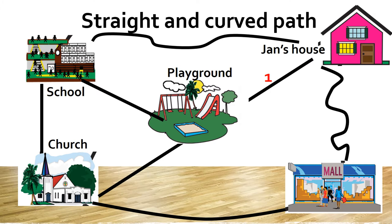How many straight and curved paths do you see on the map? Let us count the straight paths: one, two, three, four. We have four straight paths. Now let us count the curved paths: one, two, three. We have three curved paths. So, are there more straight or curved paths in this community? There are more straight paths — we have four straight paths and three curved paths.